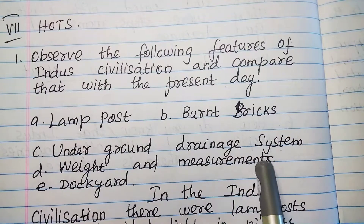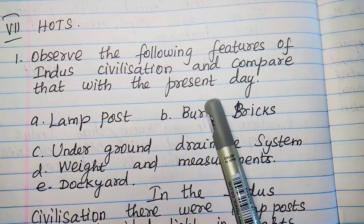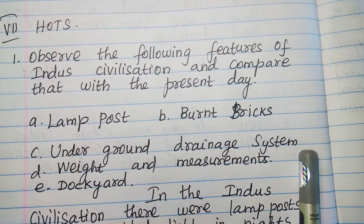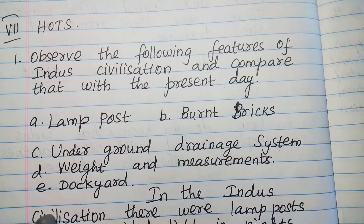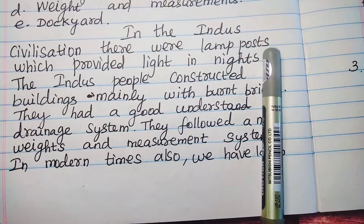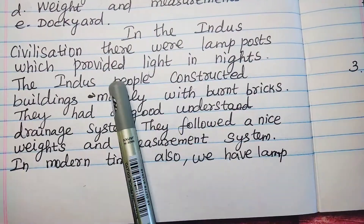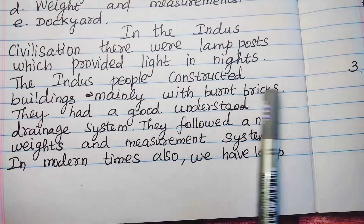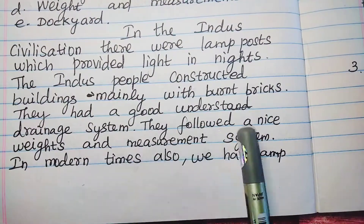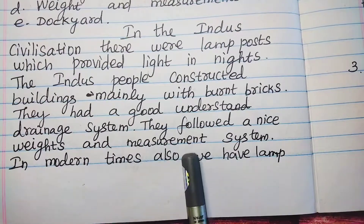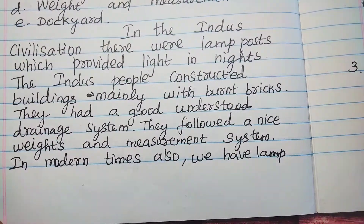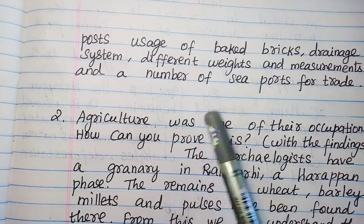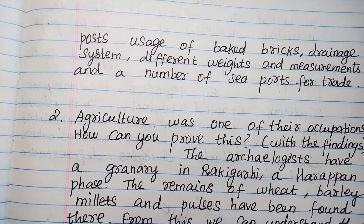Question 6: Observe the following features of Indus civilization and compare with the present day — A. Lamp post, B. Burnt bricks, C. Underground drainage system, D. Weights and measurements, E. Dockyard. In the Indus civilization, there were lamp posts which provided light at night. The Indus people constructed buildings mainly with burnt bricks. They had a good underground drainage system and followed a precise weights and measurement system. In modern times, we have lamp posts, usage of baked bricks, drainage systems, different weights and measurements, and a number of seaports for trade.